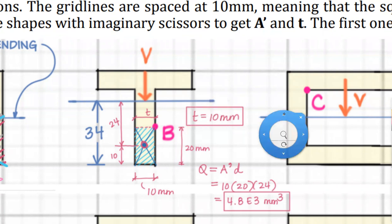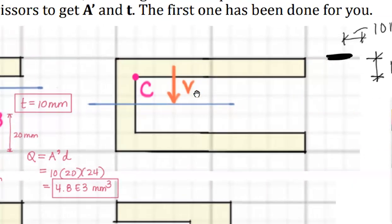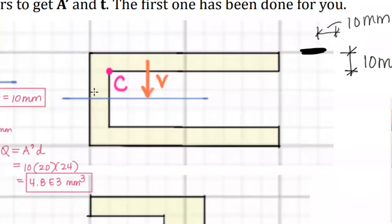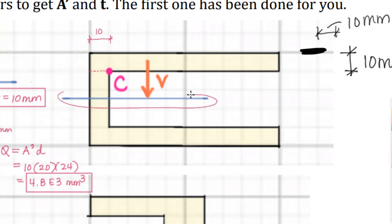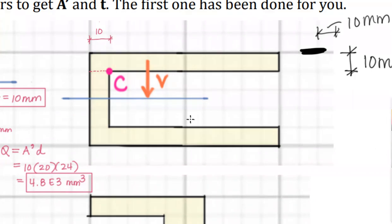Next, the C-channel at point C. Get out your imaginary scissors and cut through C parallel to the axis of bending, which is perpendicular to the direction of the internal shear force — super important geometric relationships. My thickness T is 10 millimeters.